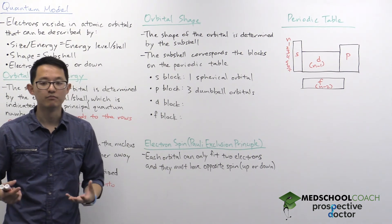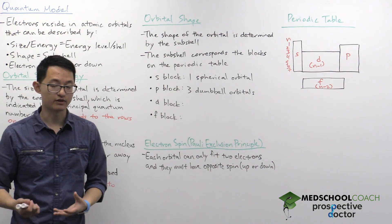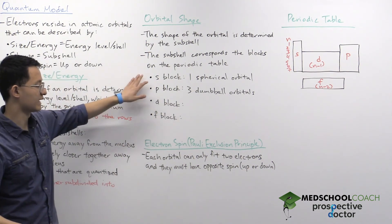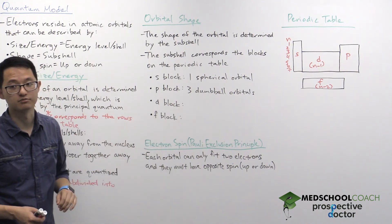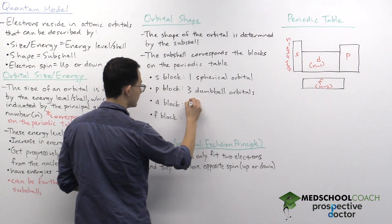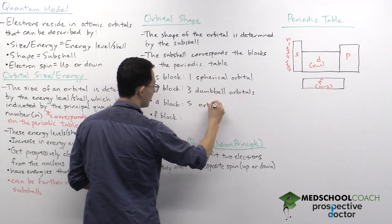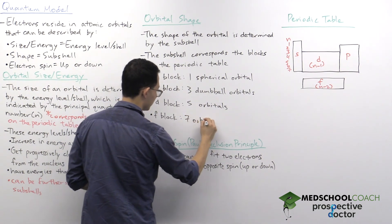The good thing for the MCAT is you're only responsible for knowing the shapes of the S and P block orbitals. You don't need to know what the D and F block orbitals look like. However, you do need to know that the D block has five orbitals and the F block has seven orbitals.